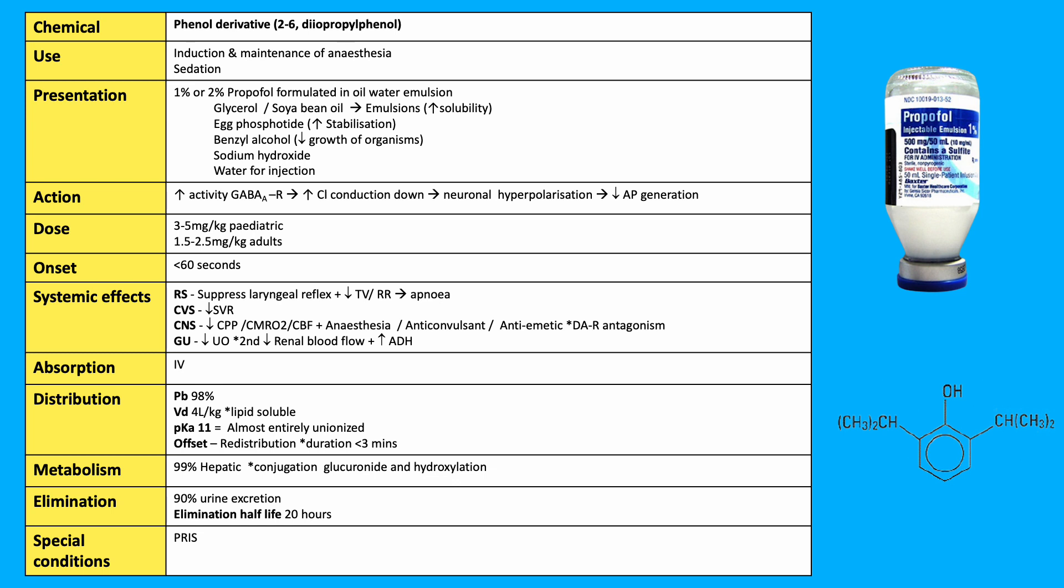It's given by the IV route. It exists extensively protein-bound with a volume of distribution of 4 liters, PKa of 11, so it's almost entirely unionized, and the offset is due to redistribution.